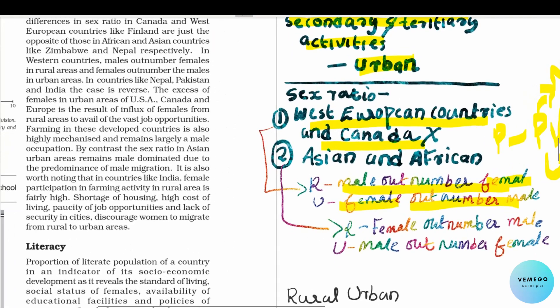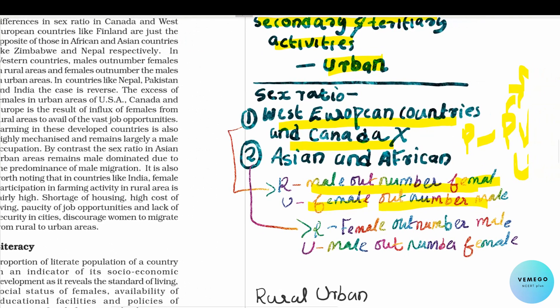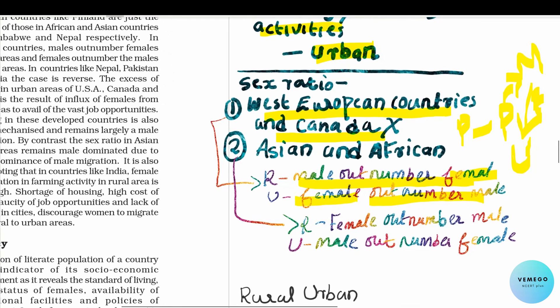We have seen that in India the sex ratio is notable. In Asian and African countries, there are fewer females. That is what we have seen in the video.